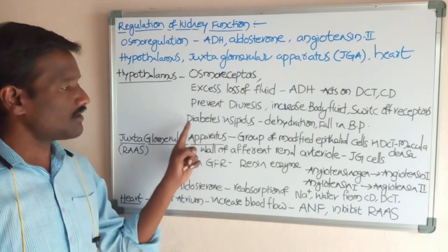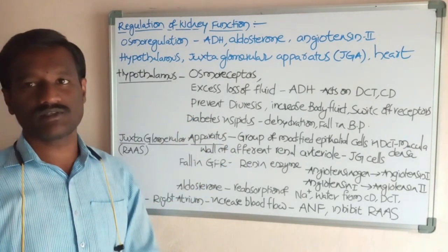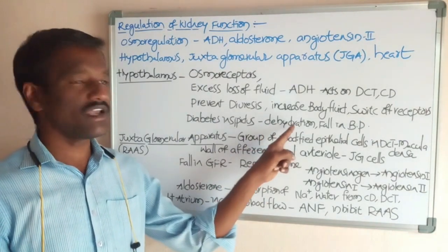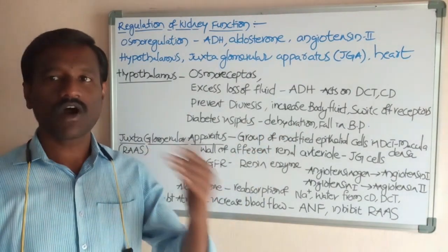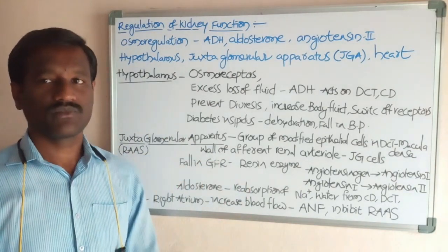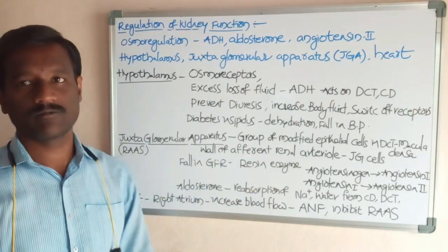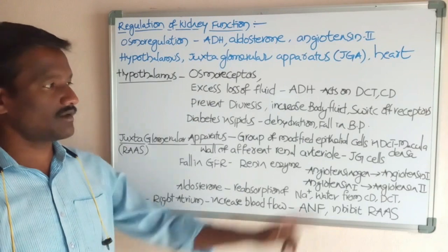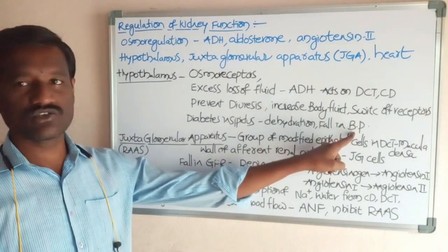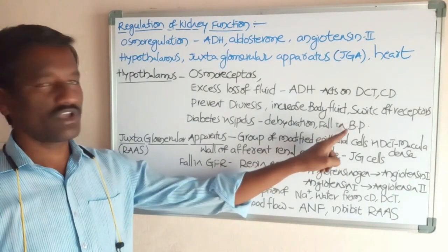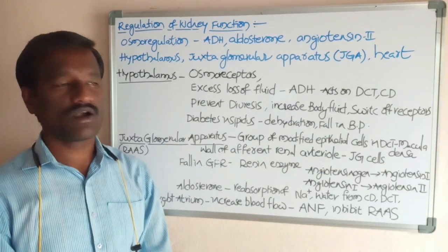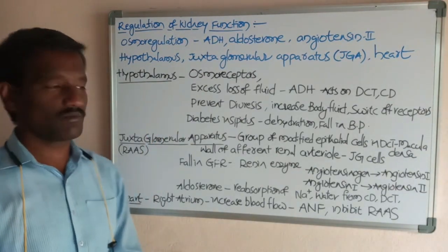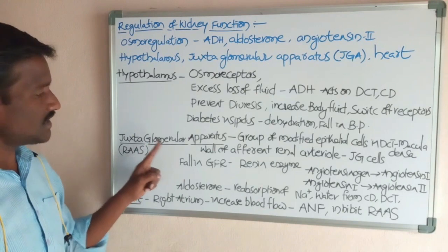Failure or unavailability of anti-diuretic hormone leads to the disease called diabetes insipidus. Diabetes insipidus causes dehydration — water levels fall down in the body — and at the same time it causes a fall in blood pressure. This is about the role of the hypothalamus in kidney function.